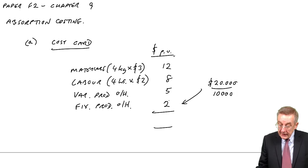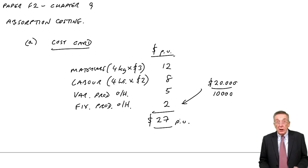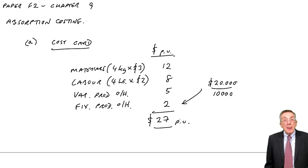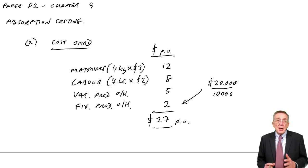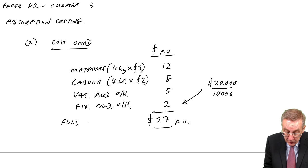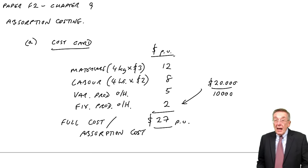Giving a total production cost of $27 per unit. Note that we're only bringing in production costs in the cost card — we only ever bring in production costs. There are other costs mentioned: a variable selling cost, a fixed selling cost. Although they will affect the profit ultimately, they're not part of the cost card. The cost card is only ever looking at the cost of production. $27 is known as the full cost, or the absorption cost. In the next chapter with marginal costing, we set the cost card up slightly differently.